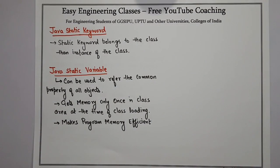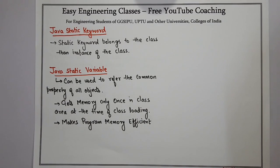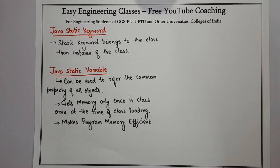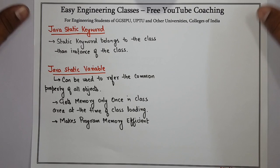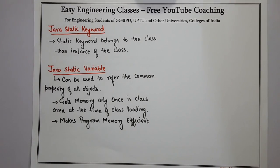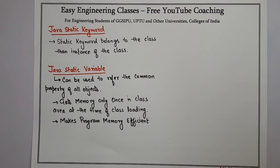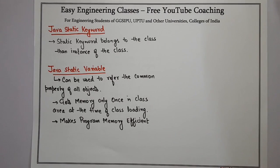Hello, today in this class we will see about the concept of Java Static Keyword. Java Static Keyword is mainly used for the memory management process. By applying Java Static Keyword with variables, methods, blocks or nested class, we can make them available for the entire class rather than the instance of the class. Java Static Keyword belongs to the class rather than the instance of the class.